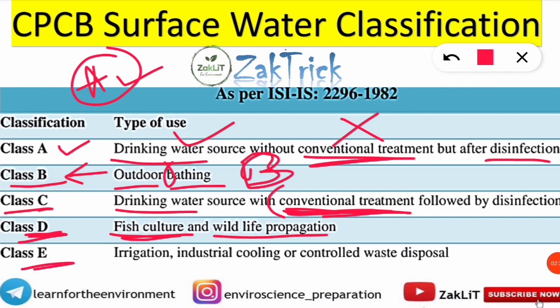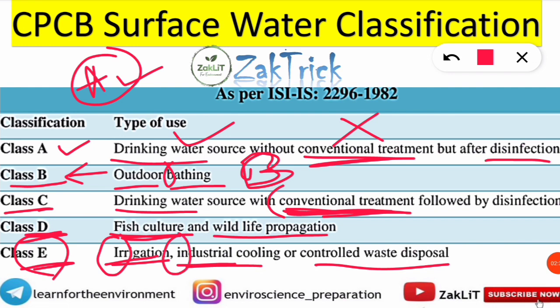Similarly, Class E is for irrigation, industrial cooling, or controlled waste disposal. When you say 'E' and 'irrigation' and 'industrial,' they sound alike — E sounds like I, irrigation, industrial. So Class E surface water is used for irrigation, industrial cooling, or controlled waste disposal.